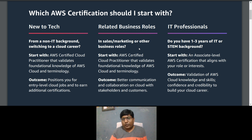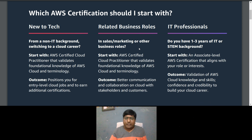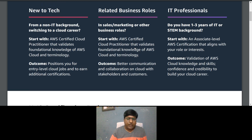If you come from an IT professional background and have one to three years of IT experience, you are able to start at the associate level with an AWS Certified Associate exam. You can also take the Cloud Practitioner if you want background on AWS services, but you can start directly with the associate level as well.